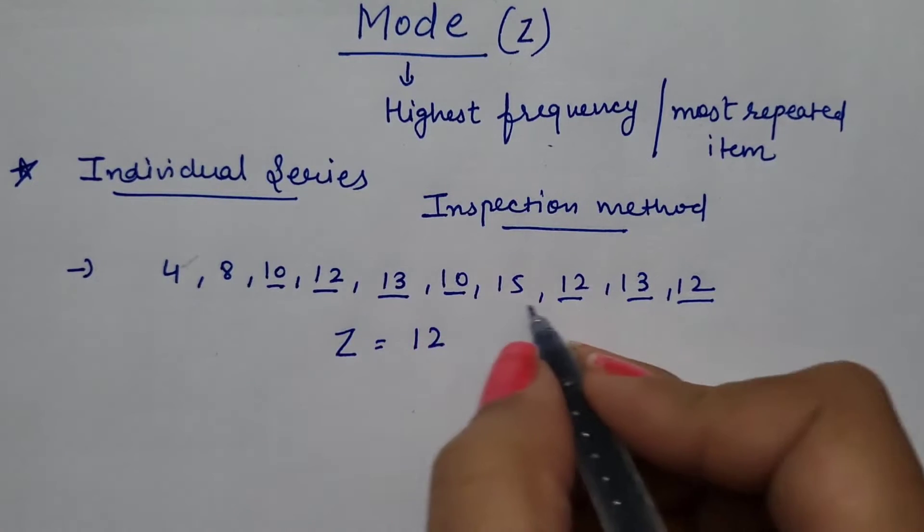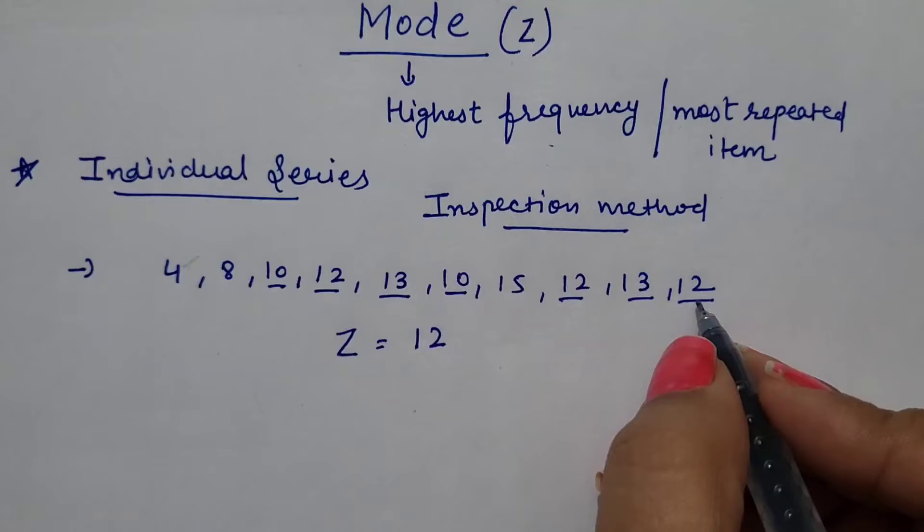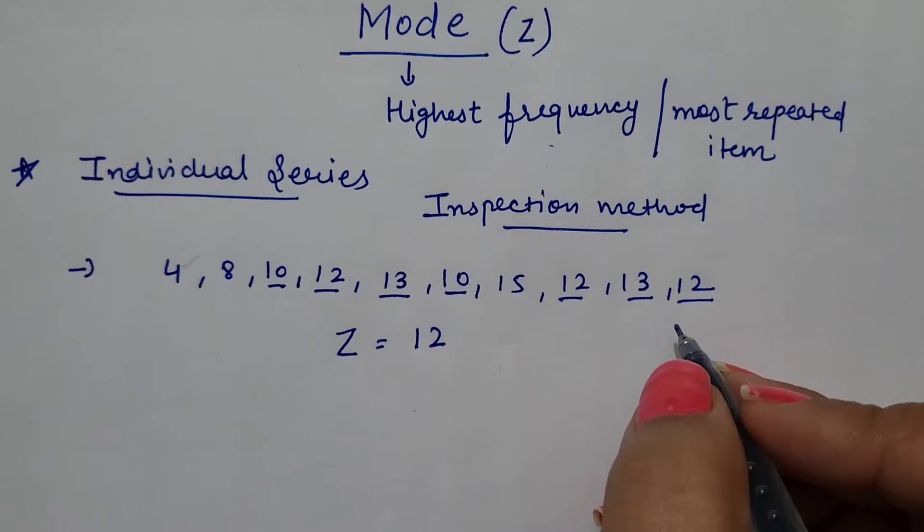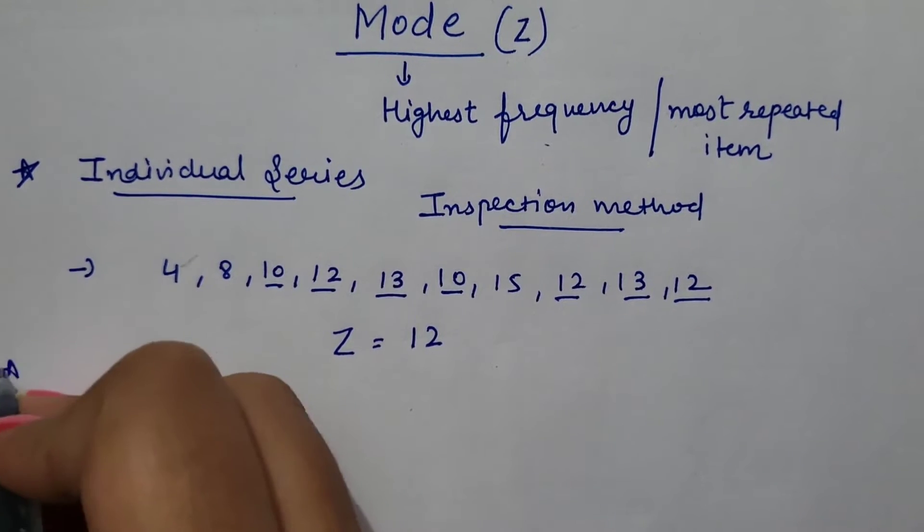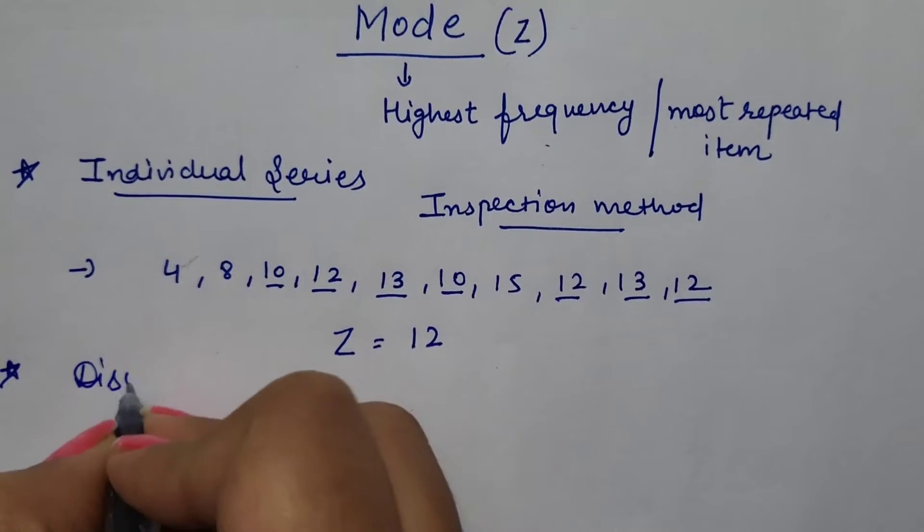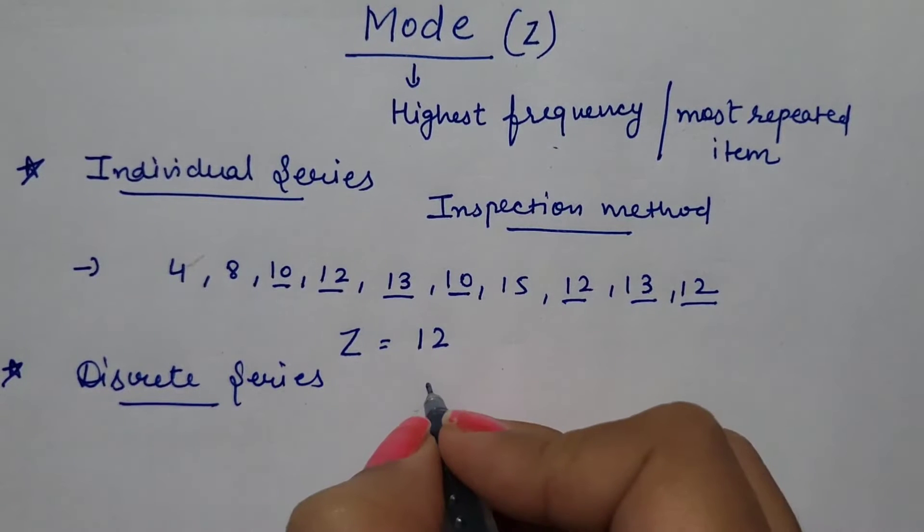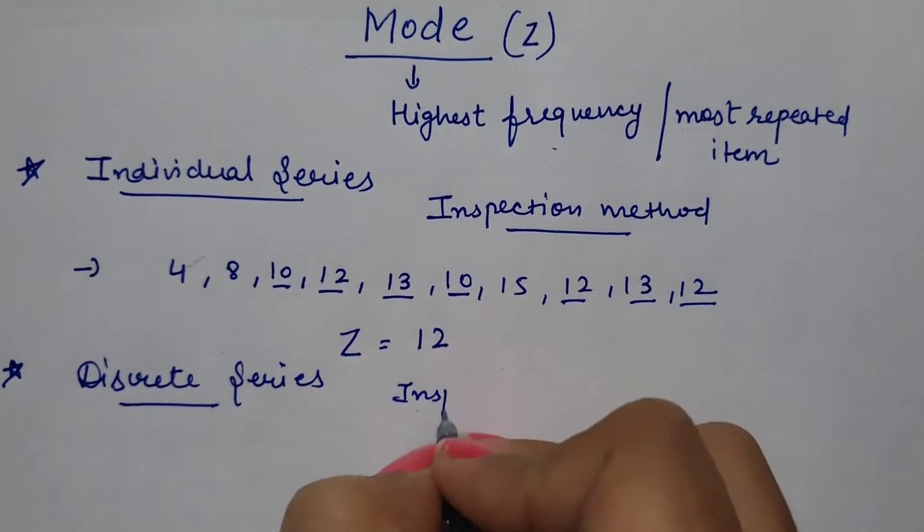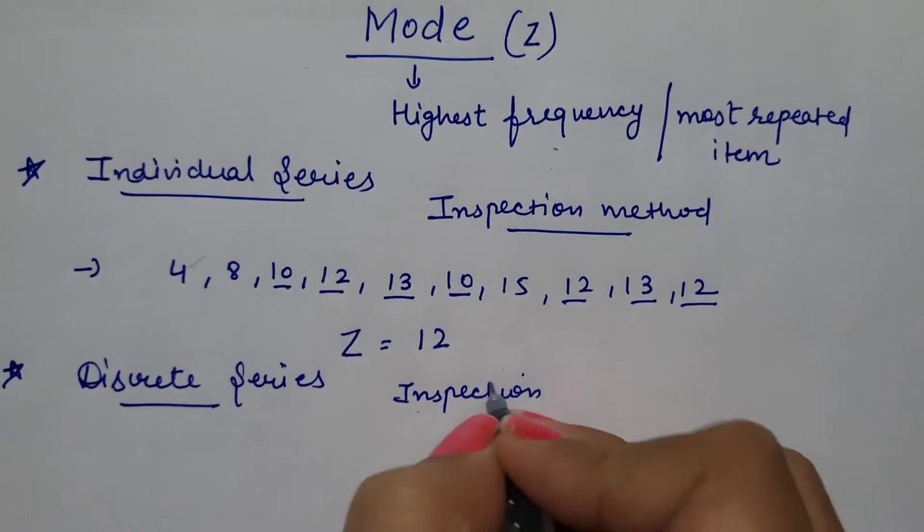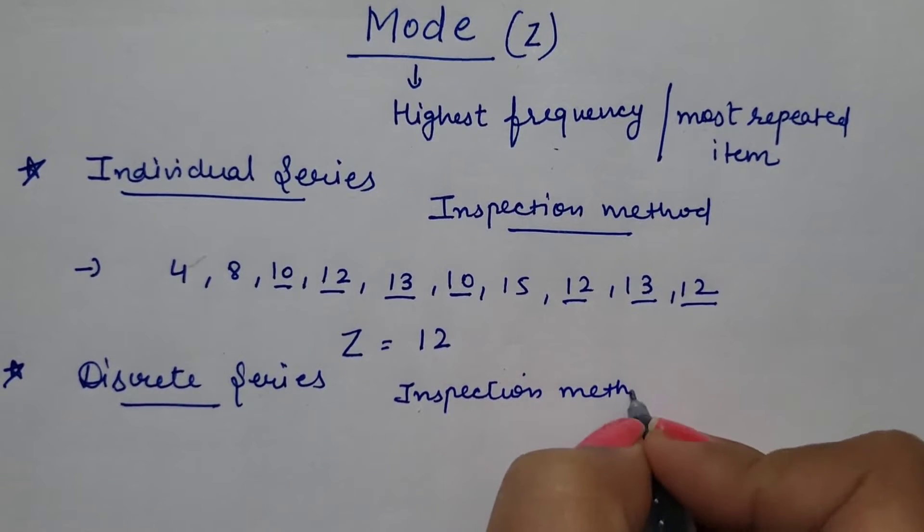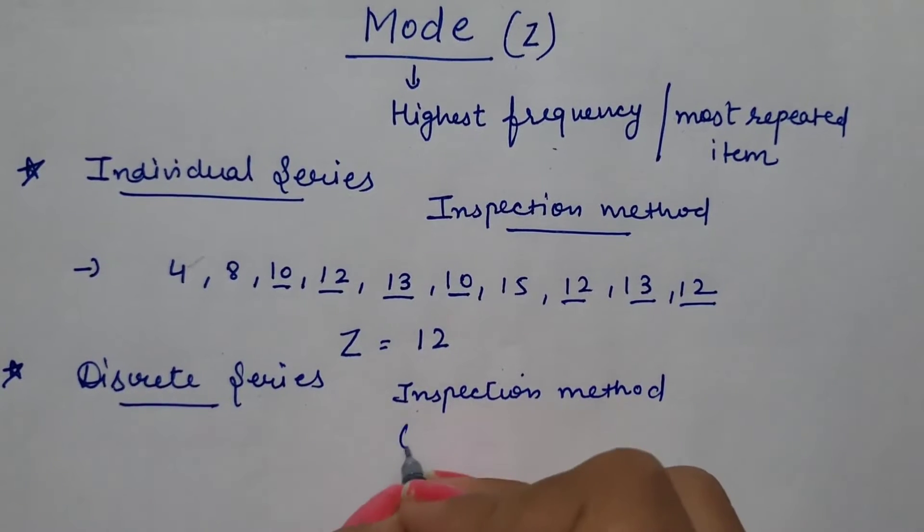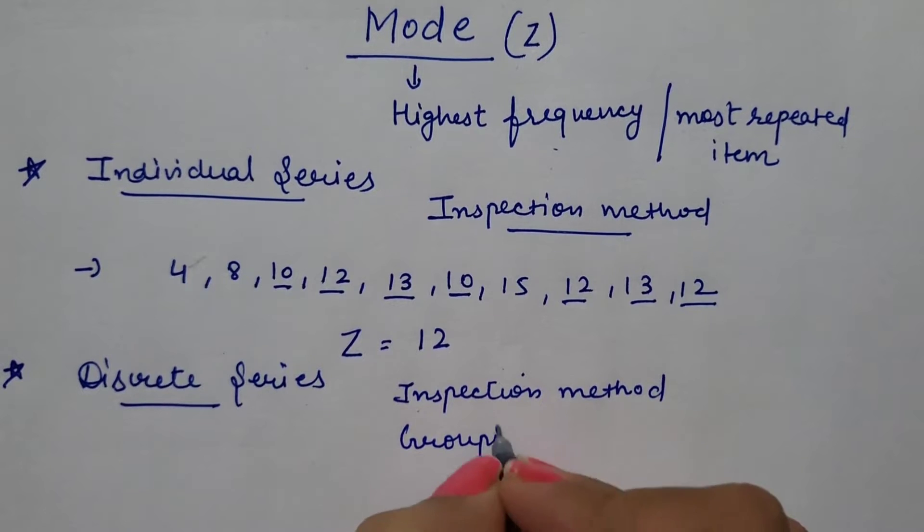If number of items are more in a series, then we can arrange the data in ascending or descending order to ascertain the correct value of mode. Next is discrete series. In discrete series, we can calculate mode by two methods.